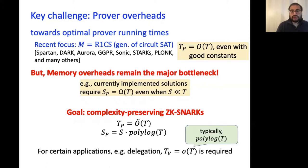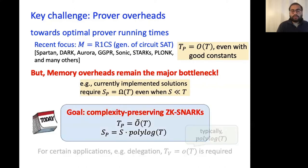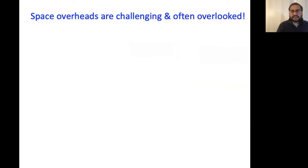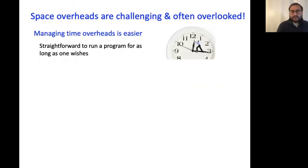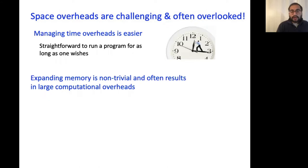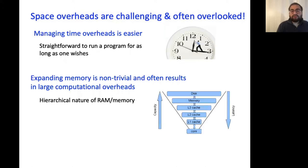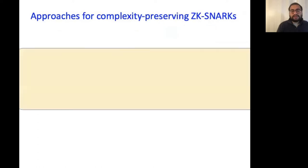Certain applications impose stricter efficiency requirements even on the verifier, which is clearly desirable, but our primary focus will be on prover efficiency. Time and space of the prover are both very important. Time overheads are often easier to manage — one can let the prover run for as much time as possible. But memory overheads are challenging: expanding memory is non-trivial due to the hierarchical nature of memory architecture in modern computer systems, and the overall running time often depends on parameters like cache efficiency, which are hard to tame.